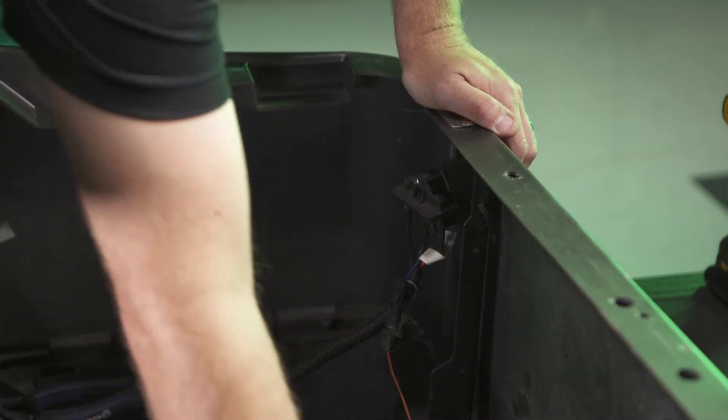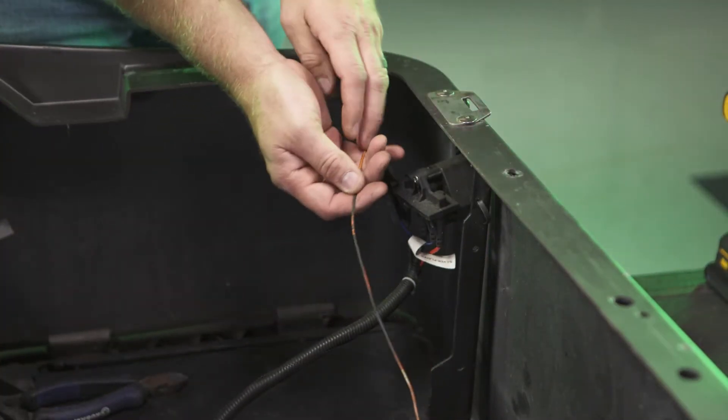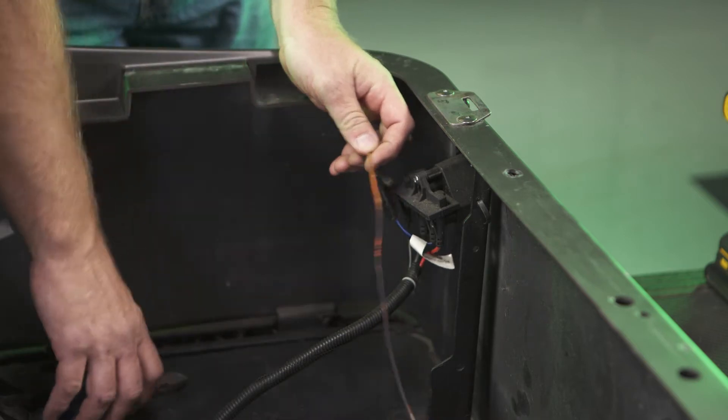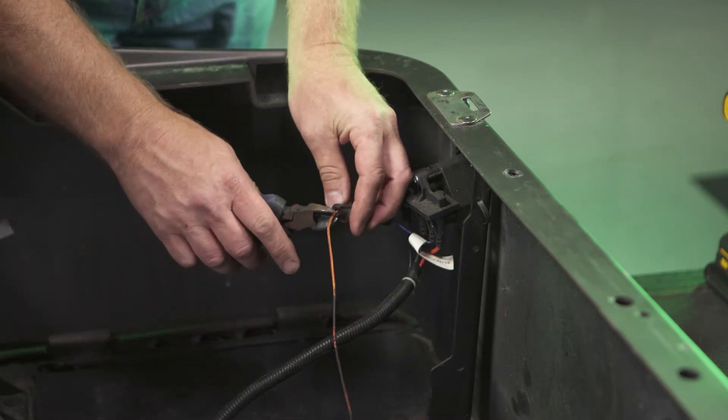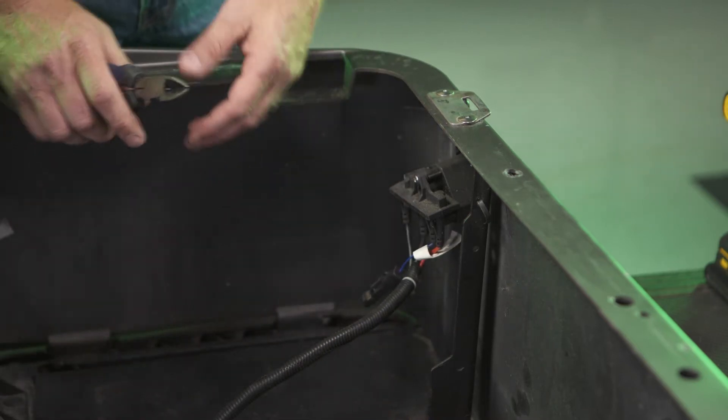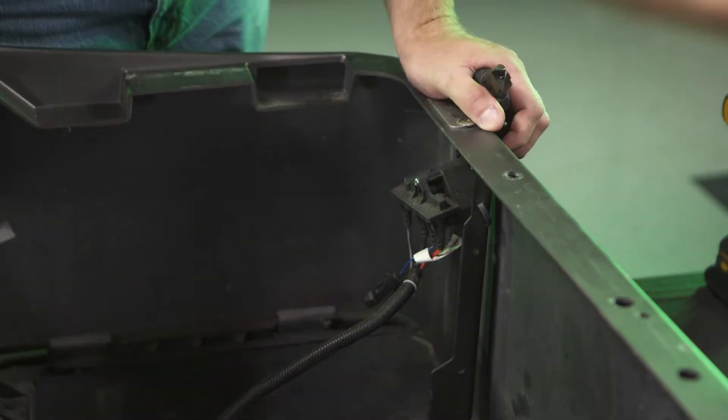Locate the factory charge port and identify the drive-off safety protection wire coming out of the back of it. The drive-off protection wire will generally be the smaller of the three wires. Cut the drive-off protection wire from the back of the charge port.